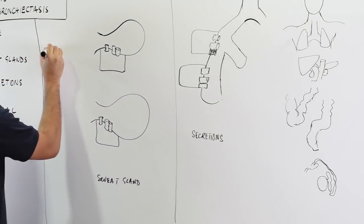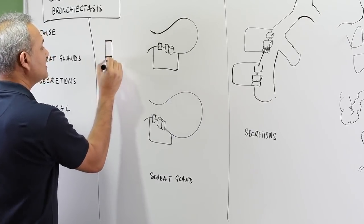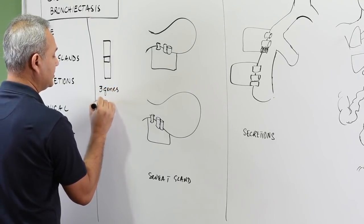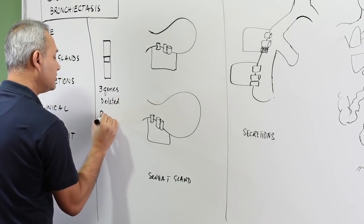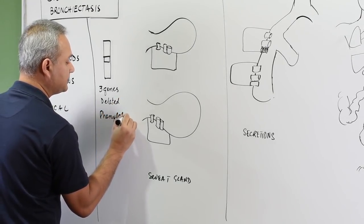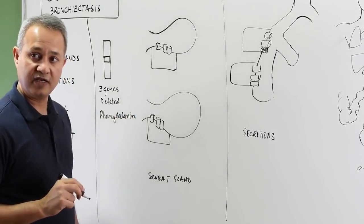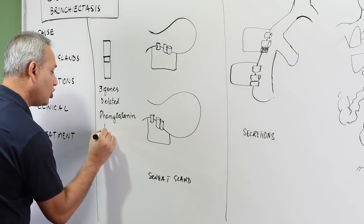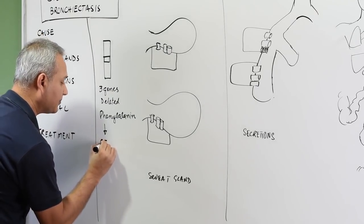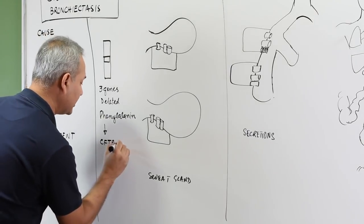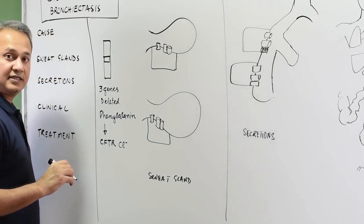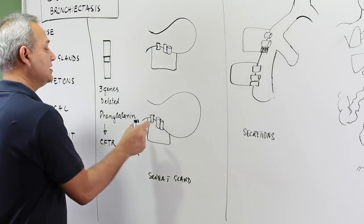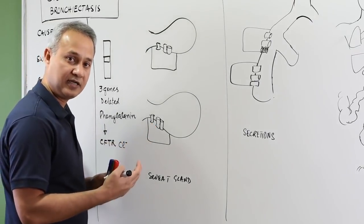On chromosome number 7, there are three genes that get deleted. These three genes that are deleted are responsible for phenylalanine production. These genes are ultimately responsible for contributing proteins to CFTR — the cystic fibrosis transmembrane chloride regulator channel. This is a protein that helps form the channels for chloride, sodium, and water.